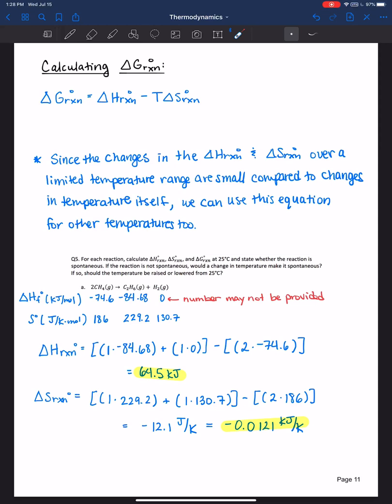Let's plug and chug into our Gibbs free energy equation for the reaction. It is equal to delta H 64.5 kilojoules minus 298 Kelvin, we're still working at 25 degrees Celsius, times negative 0.0121 kilojoules per Kelvin. Minus T delta S. This is a positive 68.1 kilojoules per mole of that reaction.